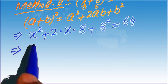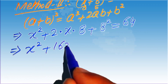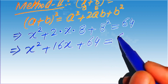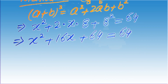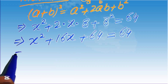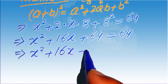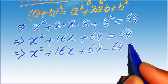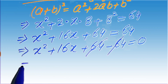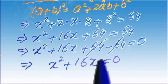Simplifying further, 2 times 8 becomes 16, so we have x squared plus 16x plus 64 equals 64. Moving 64 to the left-hand side gives x squared plus 16x plus 64 minus 64 equals 0. The 64 terms cancel, leaving x squared plus 16x equals 0.